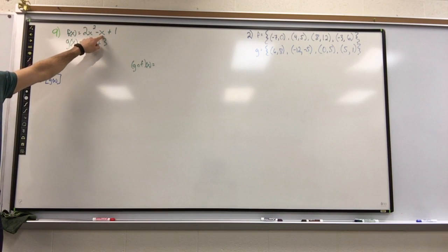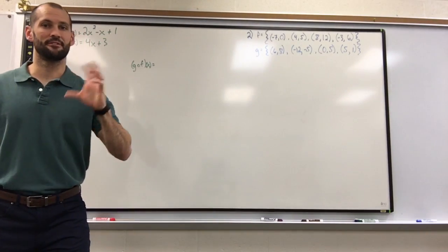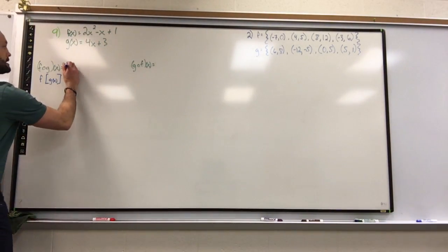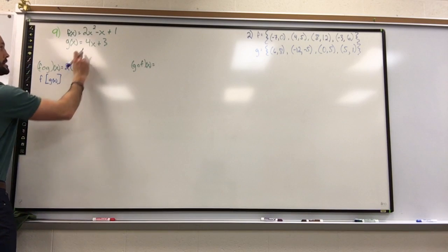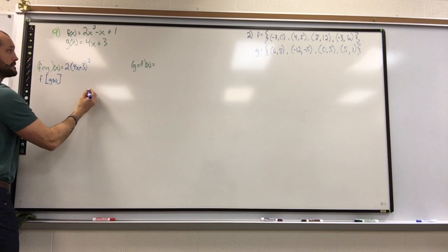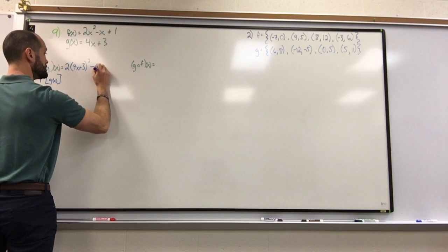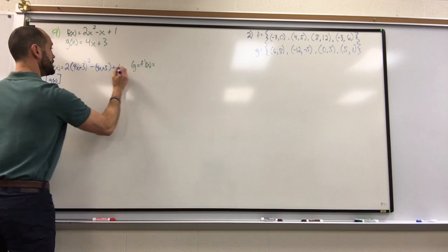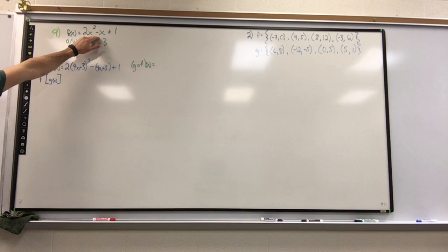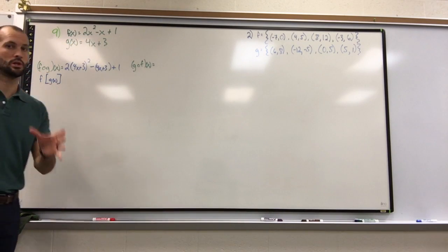So now when I'm doing f of g, instead of two times x squared, it's going to be two times the g function squared minus the g function plus one. Notice this is the exact same operations that exist in f of x, only now it's f of g of x. The only thing that changed is the input: instead of x, you're putting in the entire g function. And now we just simplify.